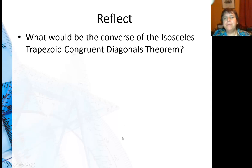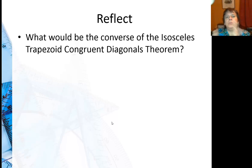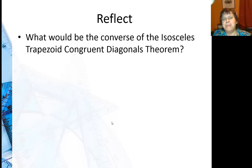So reflecting further on this isosceles trapezoid, what do you think the converse would be? The original is: if a trapezoid is isosceles, then the diagonals are congruent. The converse, remember, is switching it. So what would the converse of the isosceles trapezoid congruent diagonals theorem be?